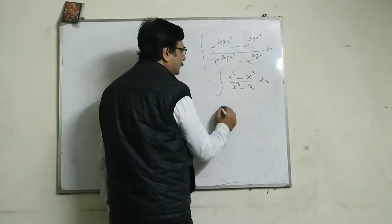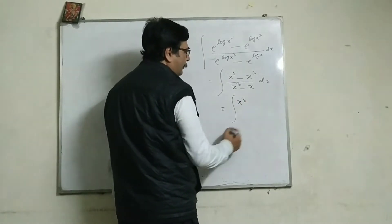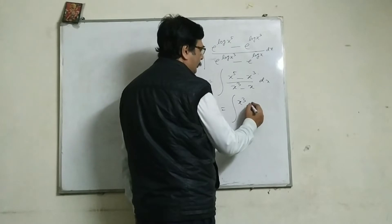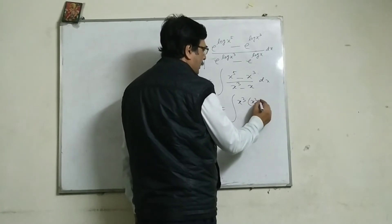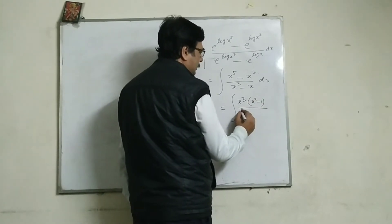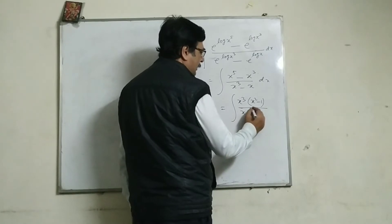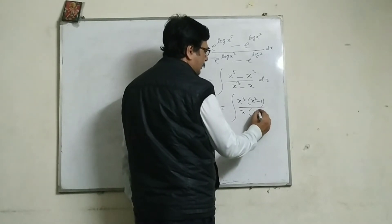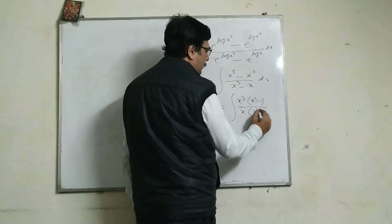So what is that? That is x cube taken common. We can write x square minus 1, and here x is taken common. This is x square minus 1 dx.